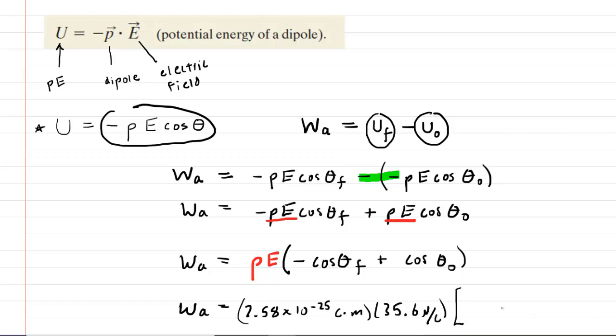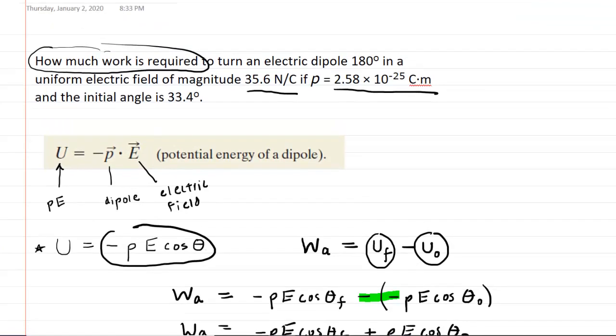And then we're going to multiply this by negative cosine of the final angle. We've got to be a little bit careful here. The initial angle is 33.4 degrees. That's relatively straightforward. And then we are turning this electric dipole 180 degrees. So we're basically going to have to add 180 degrees onto this initial angle in order to get the final angle. So it would be 33.4 degrees plus 180 degrees.